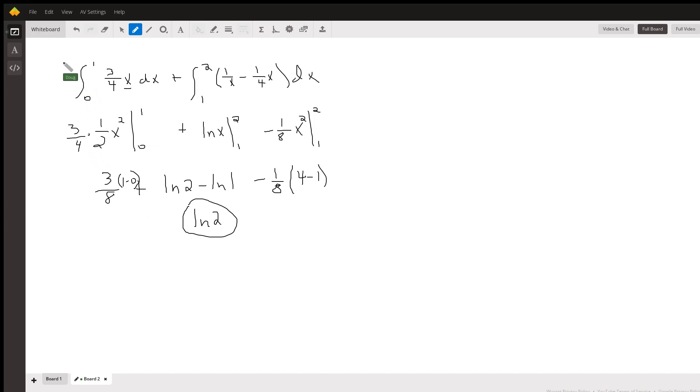The anti-derivative of 1/x is ln(x) evaluated from one to two, and then the anti-derivative of this x again is (1/2)x². The idea is that this last integral becomes a minus 3/8. We've got this plus 3/8 out here, so those two terms combine to zero, and ln(1) is zero.